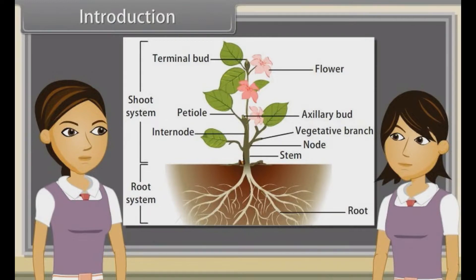When we observe a plant, we see that every plant has roots, stem and leaves. Plants also have flowers and fruits.